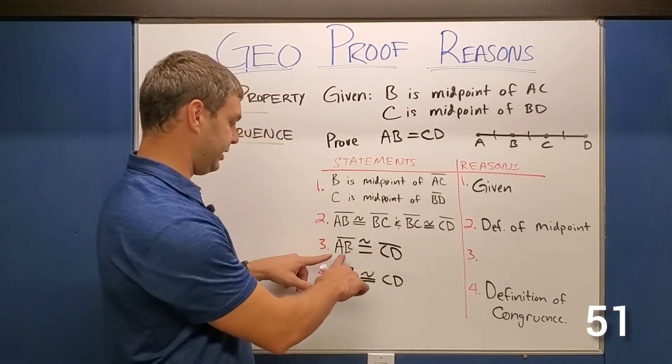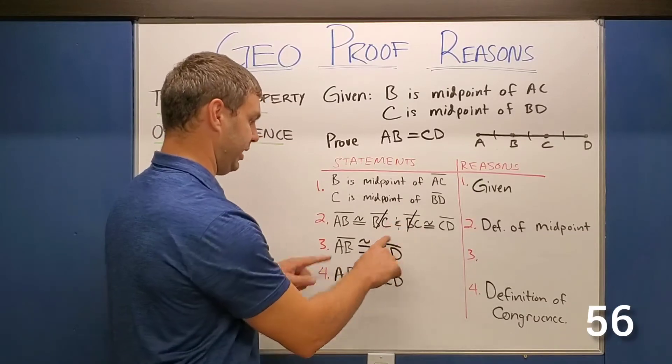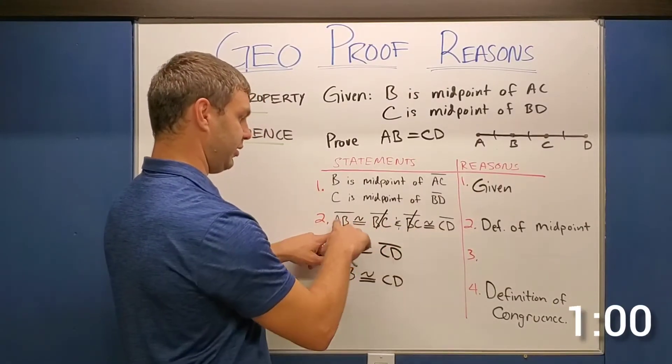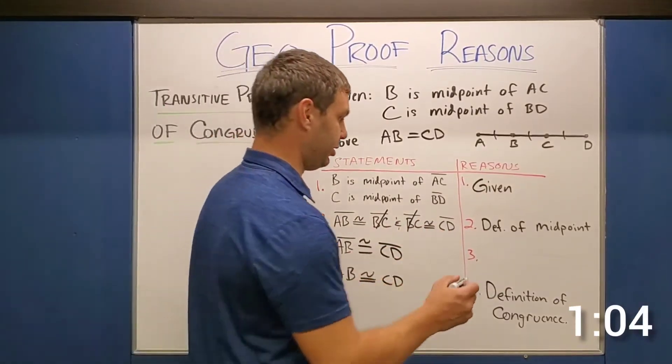And then the one we're interested in is that AB is now congruent to CD, because if I kind of cross out my middleman here, if they're both congruent to the same thing, they're congruent to each other. The first is congruent to the last. That of course, is our transitive property of congruence.